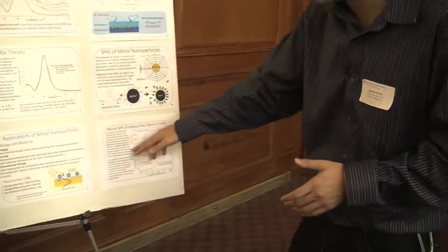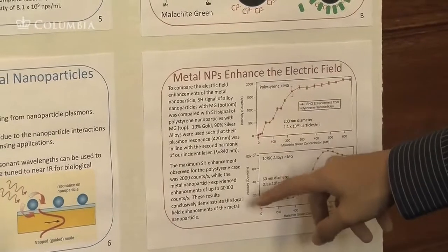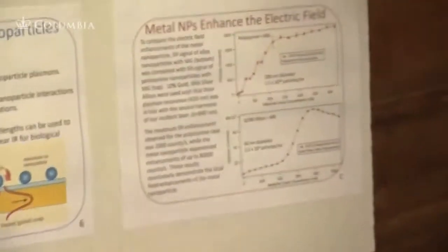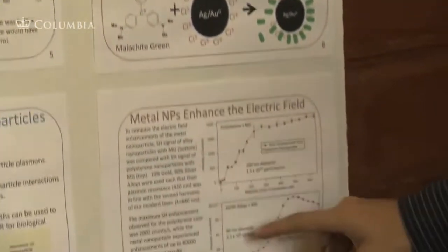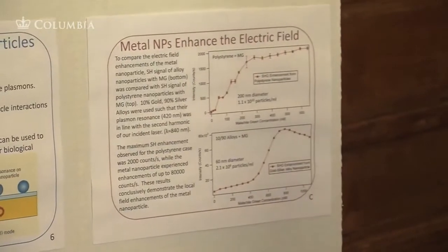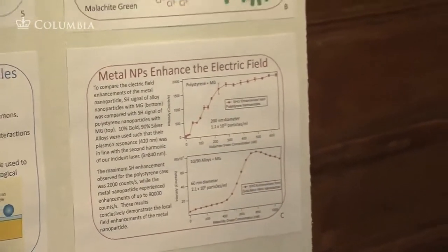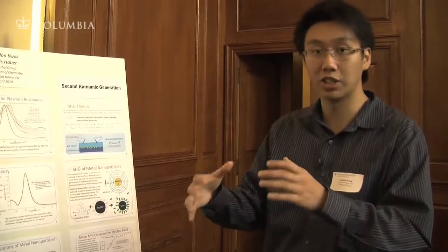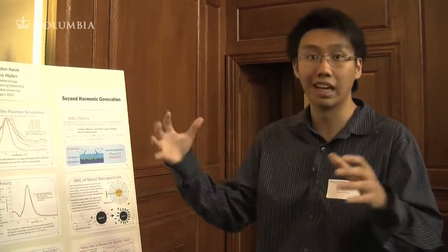By doing that, we can study what the electric field is at that surface and how it enhances other molecules. The experiment we use to quantify that enhancement compares the SHG signal of polystyrene nanoparticles with the dye molecule malachite green versus alloy nanoparticles with malachite green. Polystyrene particles are essentially insulator particles with no plasmon resonance, and the signal goes up to 2,000 counts as the dye molecule absorbs onto the surface. But with the metal nanoparticle — a 1090 alloy of 10% gold and 90% silver — you get signal up to 80,000 counts per second, quantifying the enhancement from the surface.